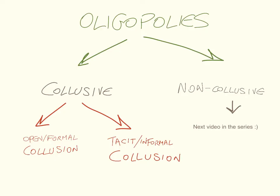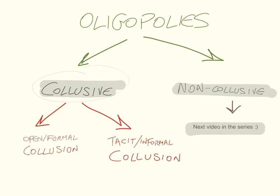There are two main types of oligopoly: collusive oligopolies, when the oligopolistic firms come together and collude or cooperate, and non-collusive oligopolies. Non-collusive oligopolies will be covered in the next video in this series — so watch out for part two of oligopolies. There are two types of collusion: open formal collusion, and tacit or informal collusion.